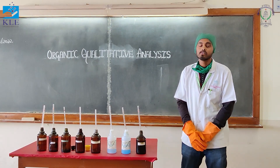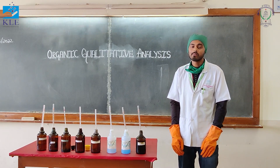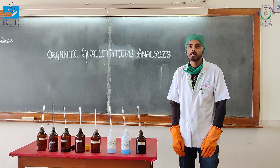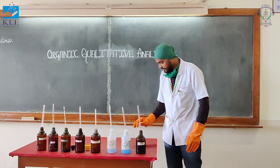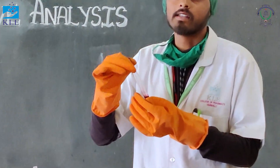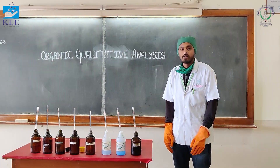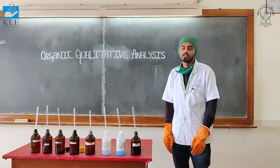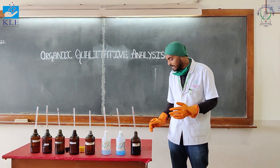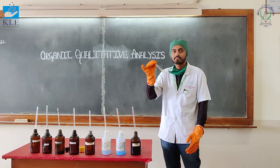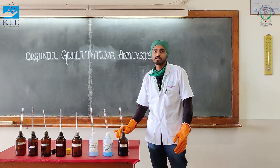The next test is Baeyer's test, also known as the action of KMnO₄. Take a test tube containing a little amount of substance, add a little amount of sodium carbonate, and add KMnO₄ solution dropwise — it decolorizes. Therefore, unsaturation or a substance with an unsaturated or easily oxidizable side chain is indicated. Next, the action of bromine water: take a test tube containing the substance, add a little amount of bromine water — it decolorizes without a precipitate. Therefore, it is an unsaturated compound.